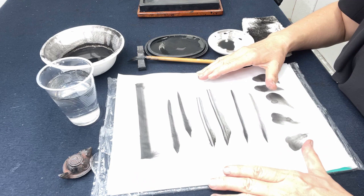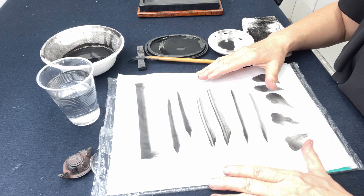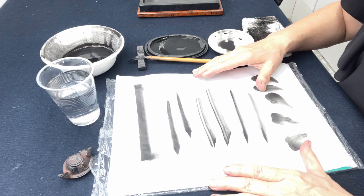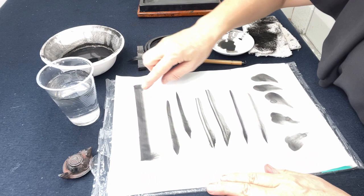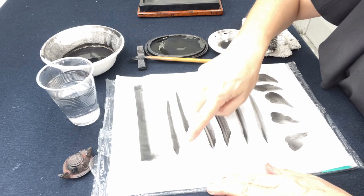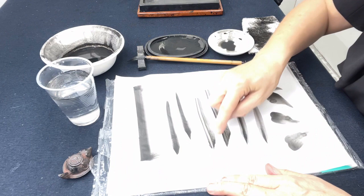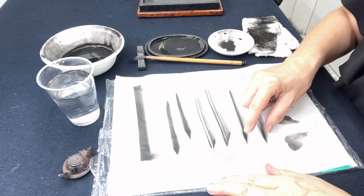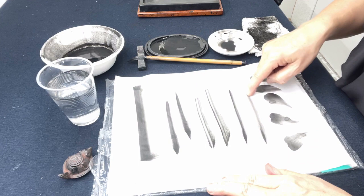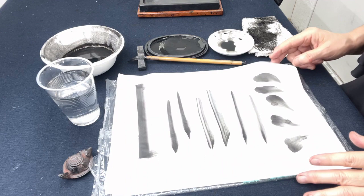There are five kinds of basic sumi-e brush strokes. This includes changes in ink value within a single brush. This is called katakuma, this side thick ink. This is called sakiguma, top thick ink. This is called ryokuma, both sides thick ink. This is called tsujikuma, center thick ink. And this is called motoguma. I'll show you.